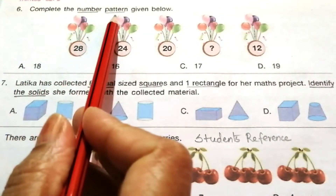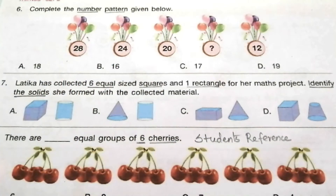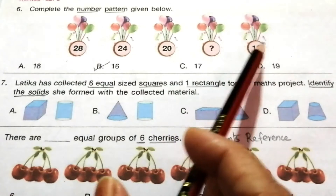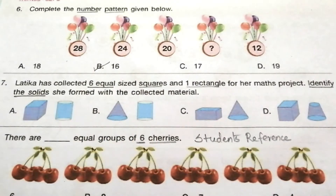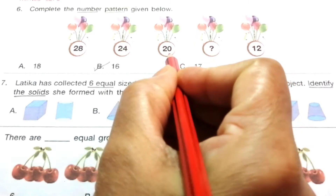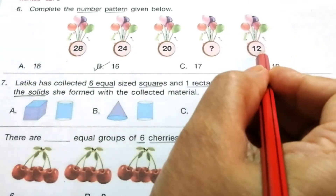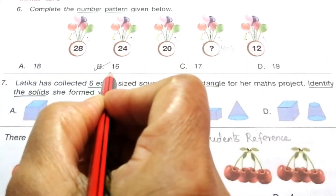Question 6: Complete the number pattern given below. The answer is B — 16. Looking at the numbers from right to left: 12, ?, 20, 24, 28 — this is the 4 times table. 4×3=12, 4×5=20, 4×6=24, 4×7=28, so 4×4=16. Therefore the answer is 16.